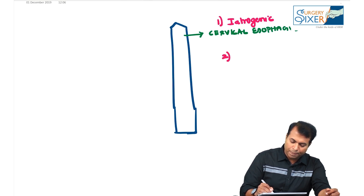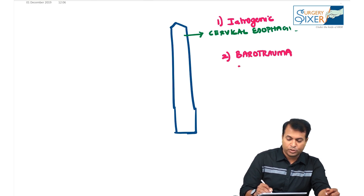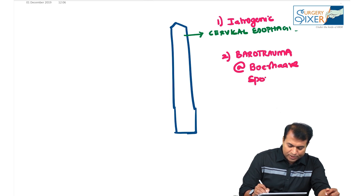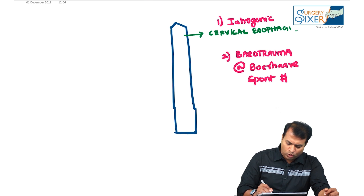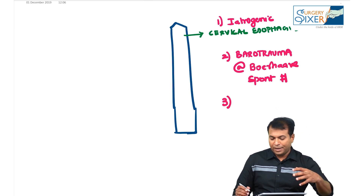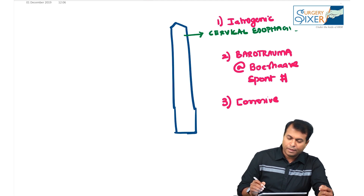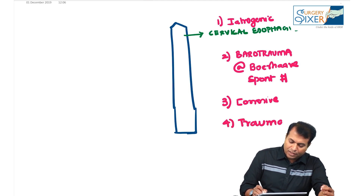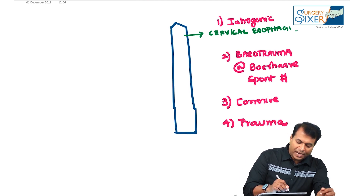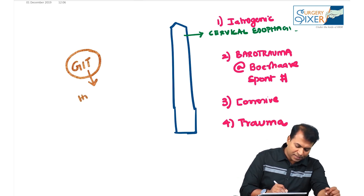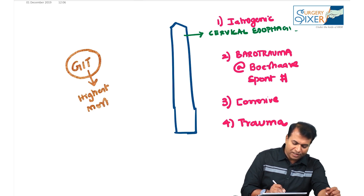Apart from iatrogenic, the other causes are barotrauma, also known as Boerhaave syndrome, also known as spontaneous rupture of esophagus. Other causes include corrosive ingestion and trauma. In the GIT, the perforation which carries the highest mortality is esophageal perforation, especially with barotrauma.